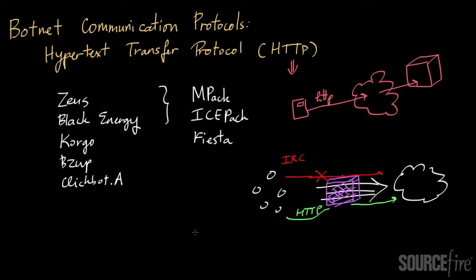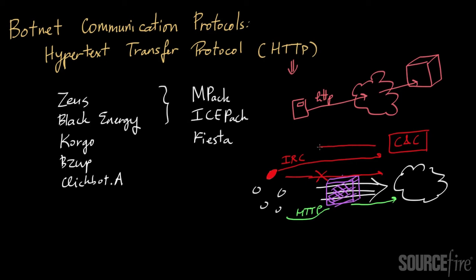Going into some of the mechanics of how HTTP bots work: they periodically make requests to their CNC servers. For example, if you're an HTTP-infected bot, the bot is going to communicate to a CNC server over HTTP — it will effectively fetch a web page, or maybe provide a status message via URL, and then get back a list of commands from the server.